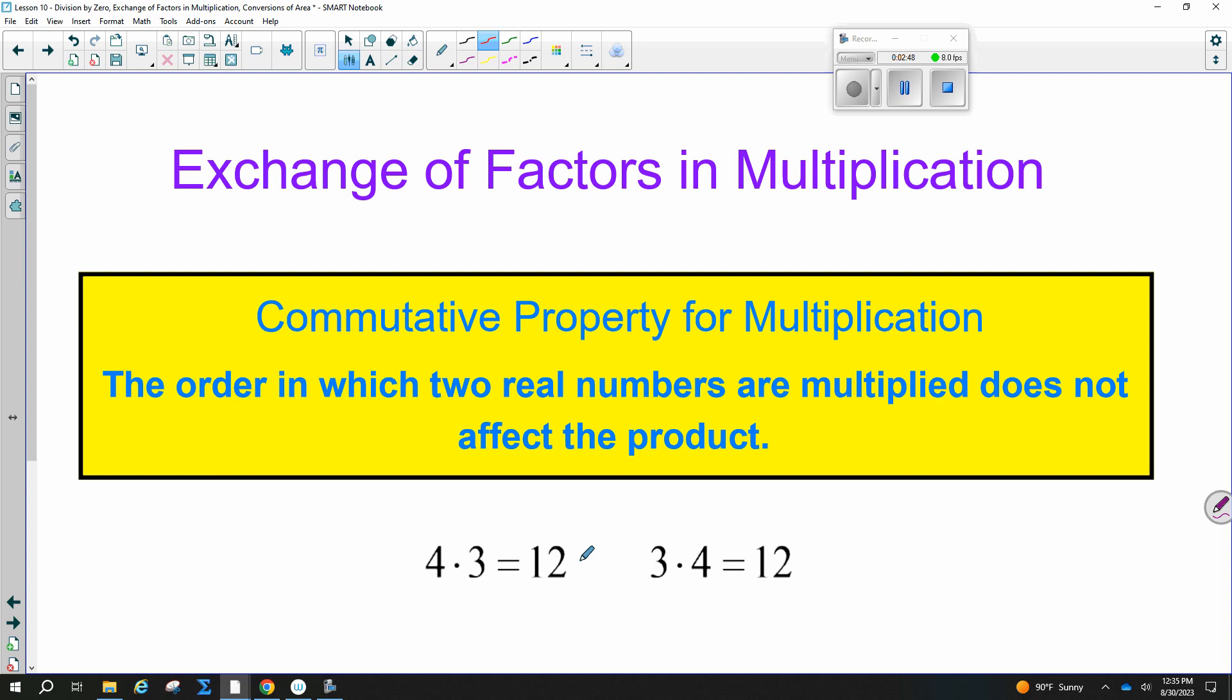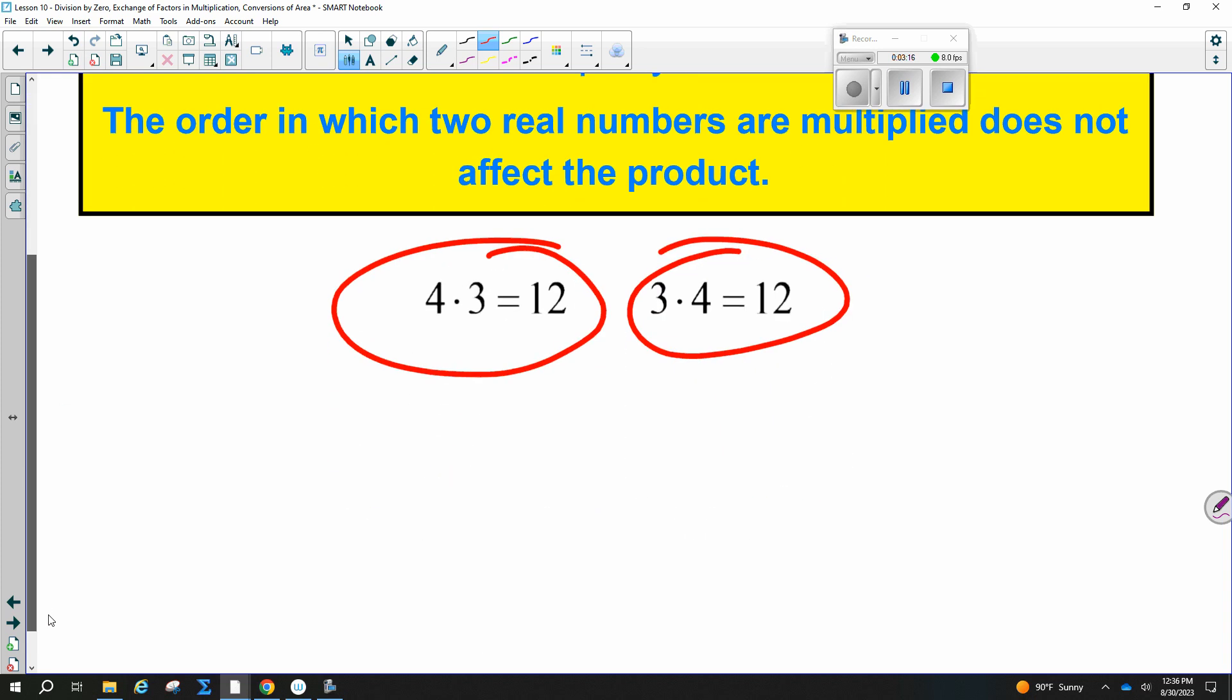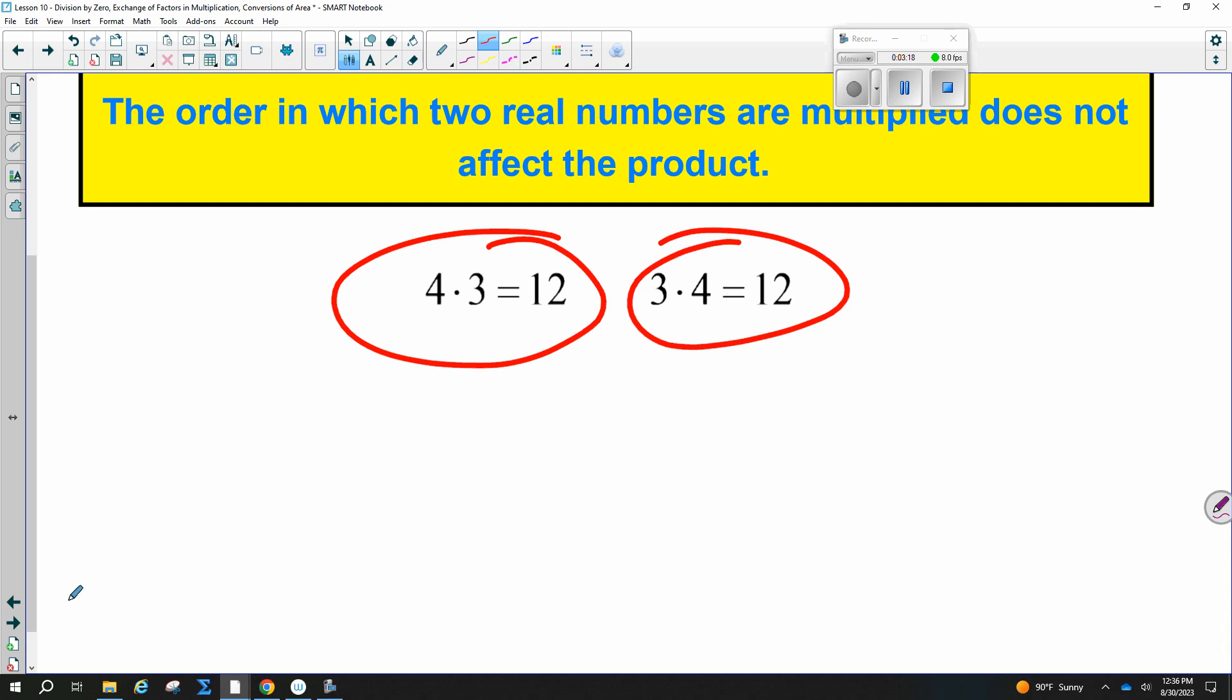Exchange of factors in multiplication. Factors are just things we're multiplying together. So basically, this is the commutative property for multiplication, where you can multiply in either order. But commutative property of addition would be like three plus four is the same as four plus three. This is commutative property of multiplication, where you can multiply in any order. Can you divide in any order, though, and get the same answer? No. It only works for multiplication and addition.